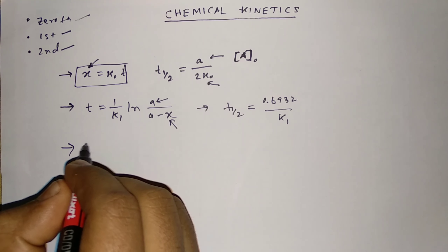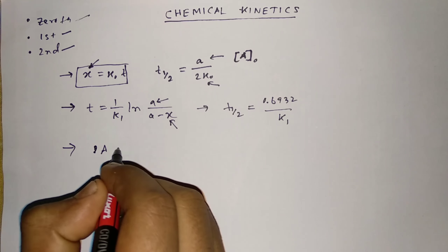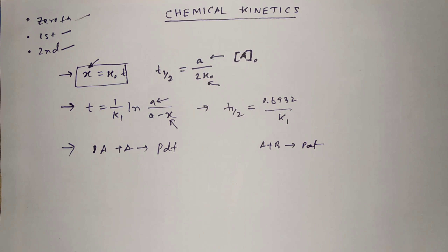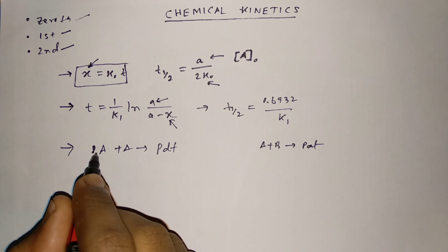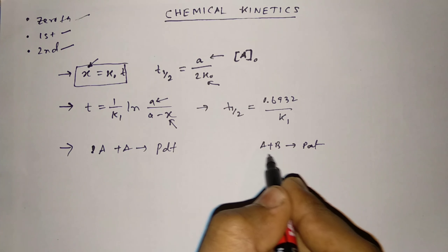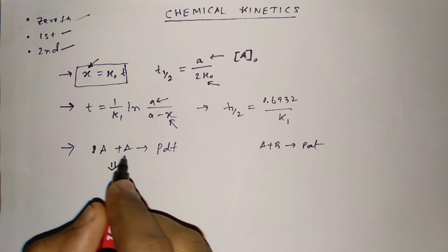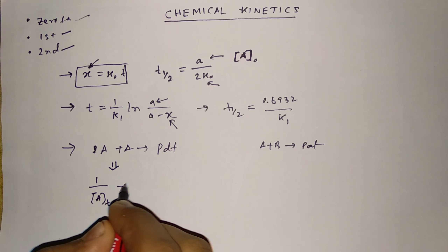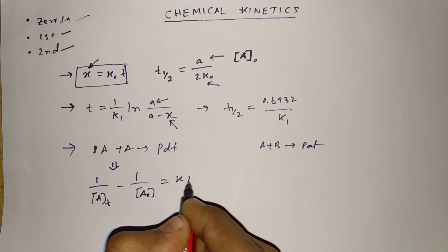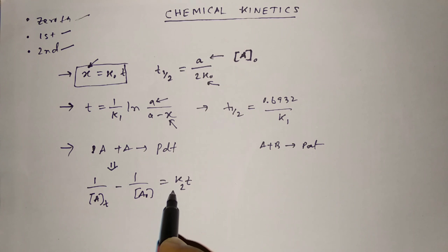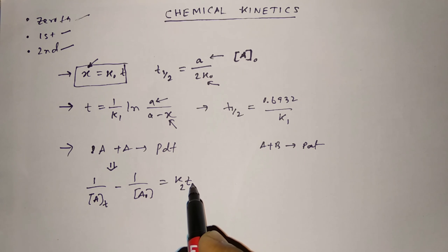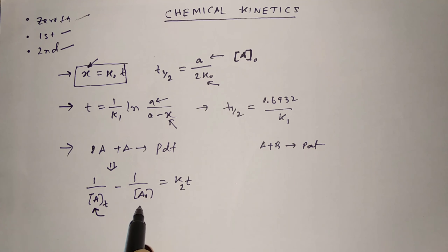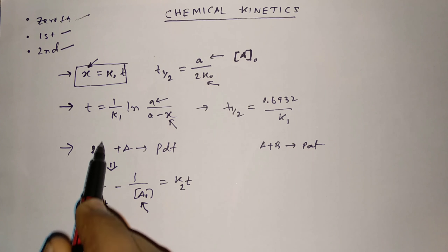For the second order rate equation, there are two types: A + A giving product, or A + B giving product. If the two reactants are the same (A + A), the rate equation is: 1/Aₜ − 1/A₀ = k₂t, where k₂ is the rate constant for the second order reaction, Aₜ is the concentration of reactant at time t, and A₀ is the initial concentration of the reactant.